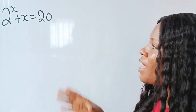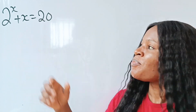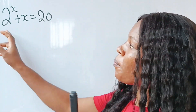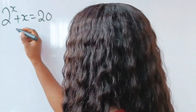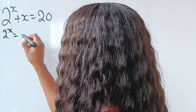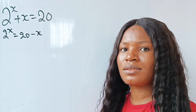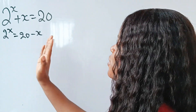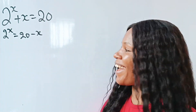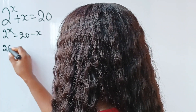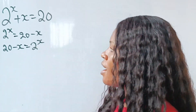Welcome to my channel. Let's get straight to the point and solve for the value of x. First, leave the power alone and take the x term to the other side of the equation. So we have 2x is equal to 20 minus x. Now I'm going to take terms to opposite sides — I have my reason, trust the process — so we are going to have 20 minus x is equal to 2 to the power of x.